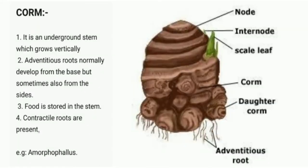Corm is an underground stem which grows vertically, or you can say longitudinally. It is not dorsiventral. Adventitious roots normally develop from the base but sometimes also from the sides of the corm. Food is stored in the stem and the apical bud is large. Contractile roots are present.